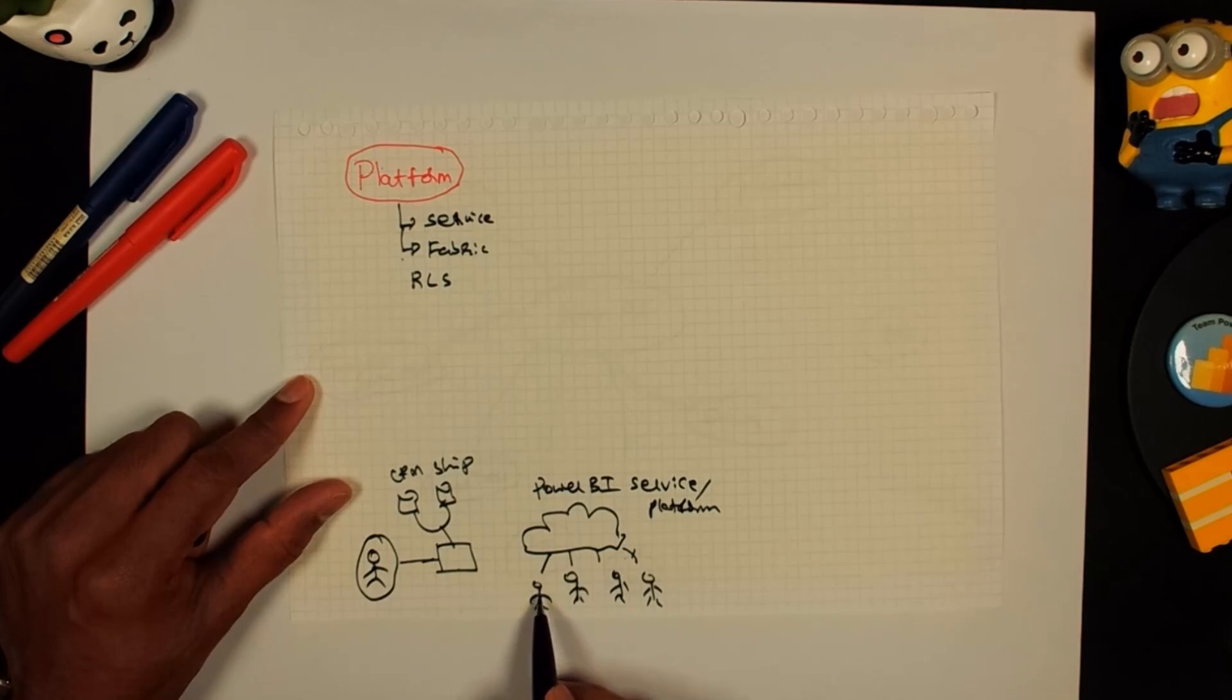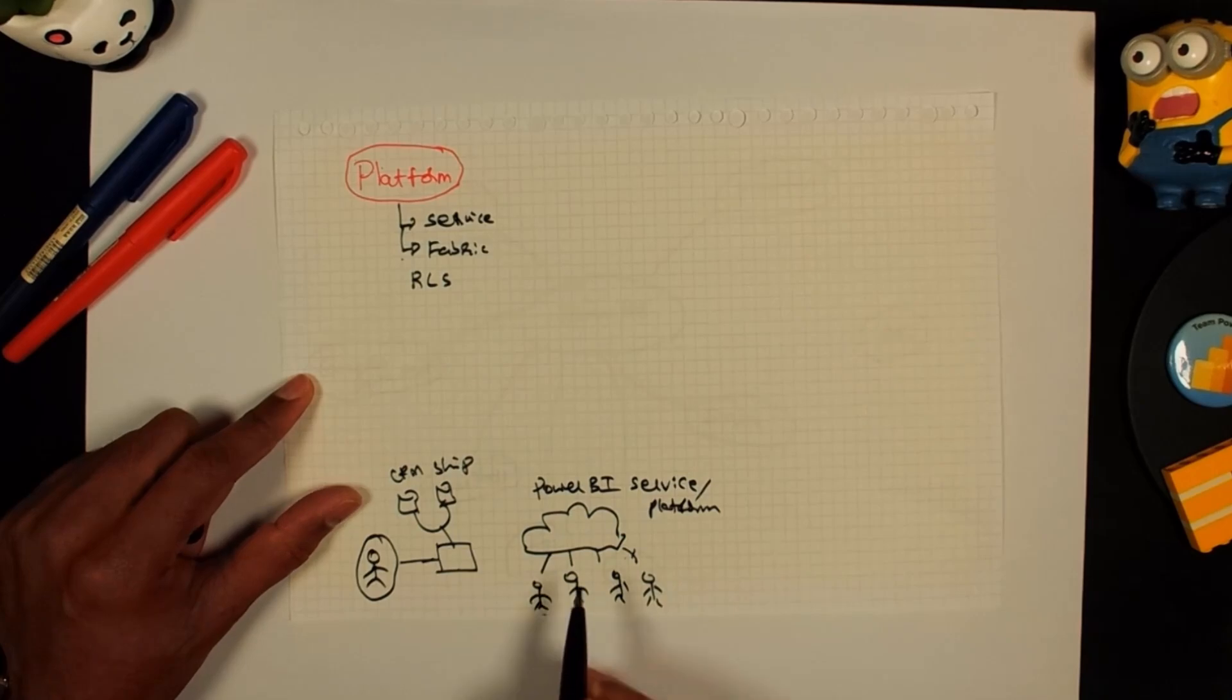So you have got one person that is responsible for chocolate bars, one person that is responsible for cookies and one person for something else. You don't want the chocolate bars managers to know what is happening in the cookie business. Likewise, you don't want this guy to know what is happening elsewhere.